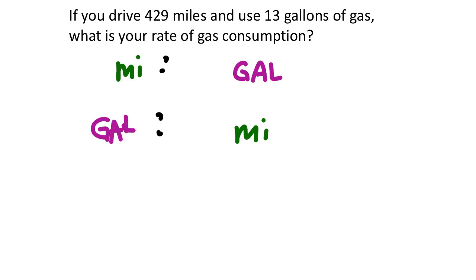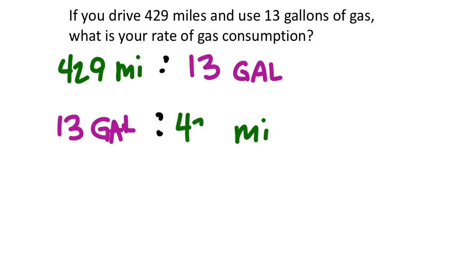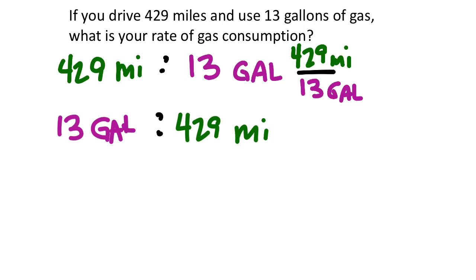Starting with 429 miles to 13 gallons as a fraction, I want to simplify. Since 13 is prime, I check whether 429 is divisible by 13 in my calculator — and it is. 429 divided by 13 is 33, and 13 divided by 13 is 1, giving us 33 over 1.